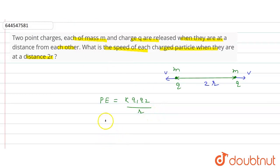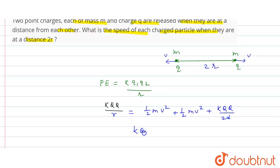So here, this is the potential energy. Applying law of conservation of energy, this will be k q q upon r is equal to 1/2 mass m v square plus 1/2 m v square plus this will be k q q upon 2r.